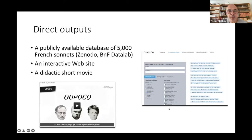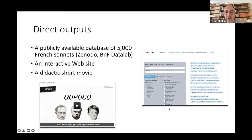There are direct outputs you can see online. What we have produced is a publicly available database of more than 5,000 French sonnets, produced through collaboration with the BNF — the French National Library. They gave us lots of texts and books about poetry, and we extracted from these books the sonnets that they didn't have directly. So it was a good exchange: they gave us data and we are able to give them back a corpus that is available for other researchers. There is also an interactive website that you can use and explore, and a didactic short movie.